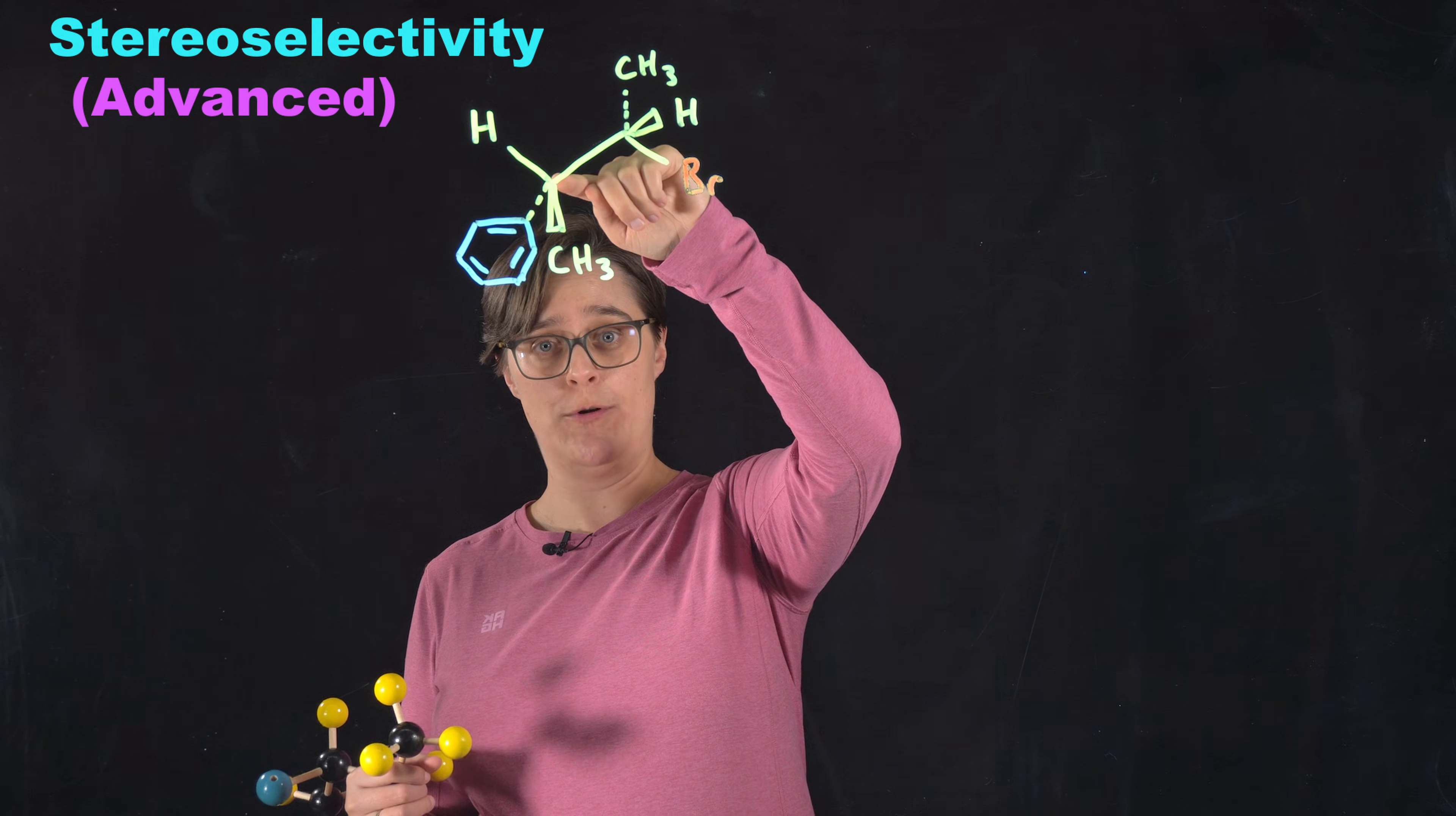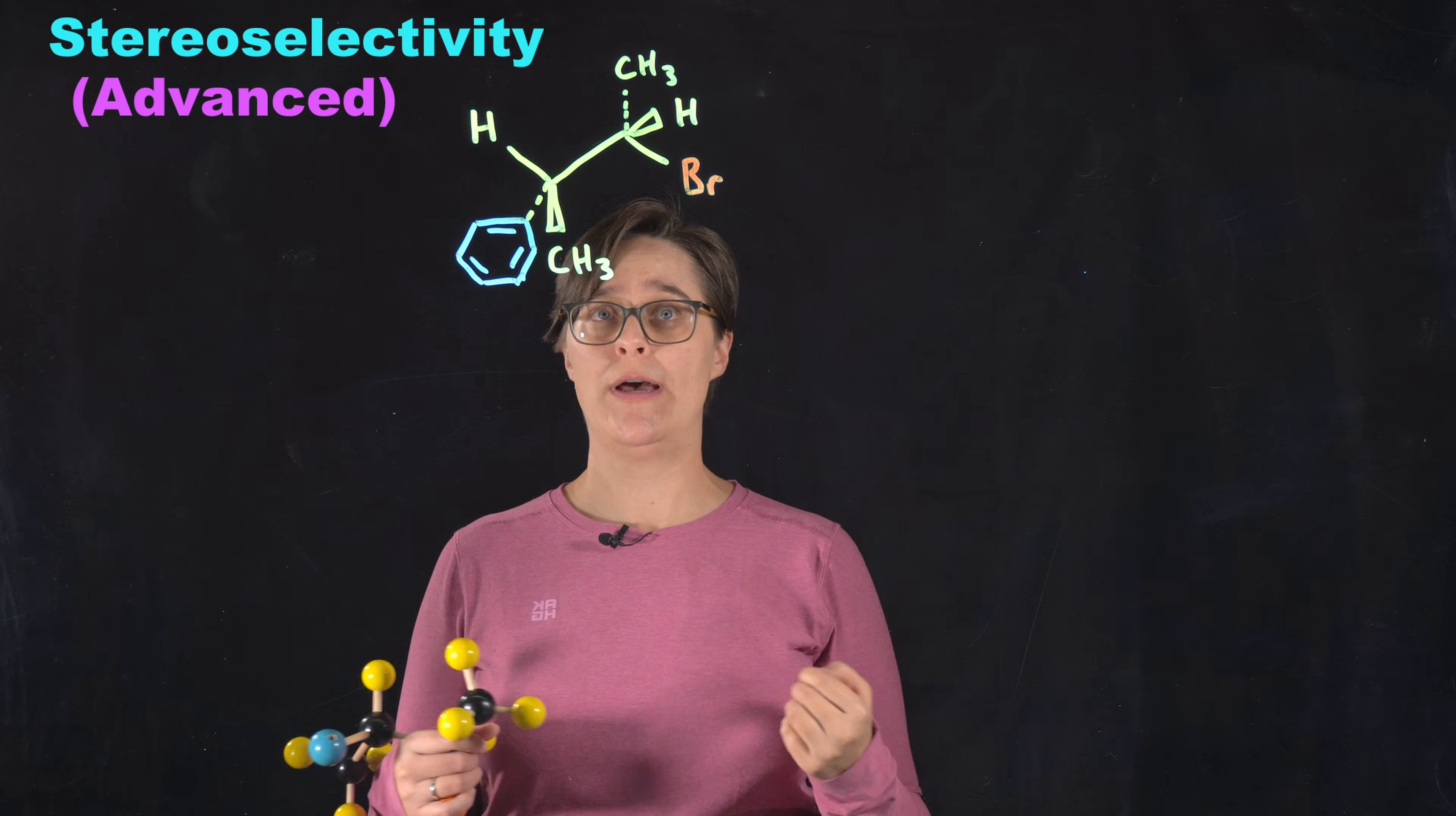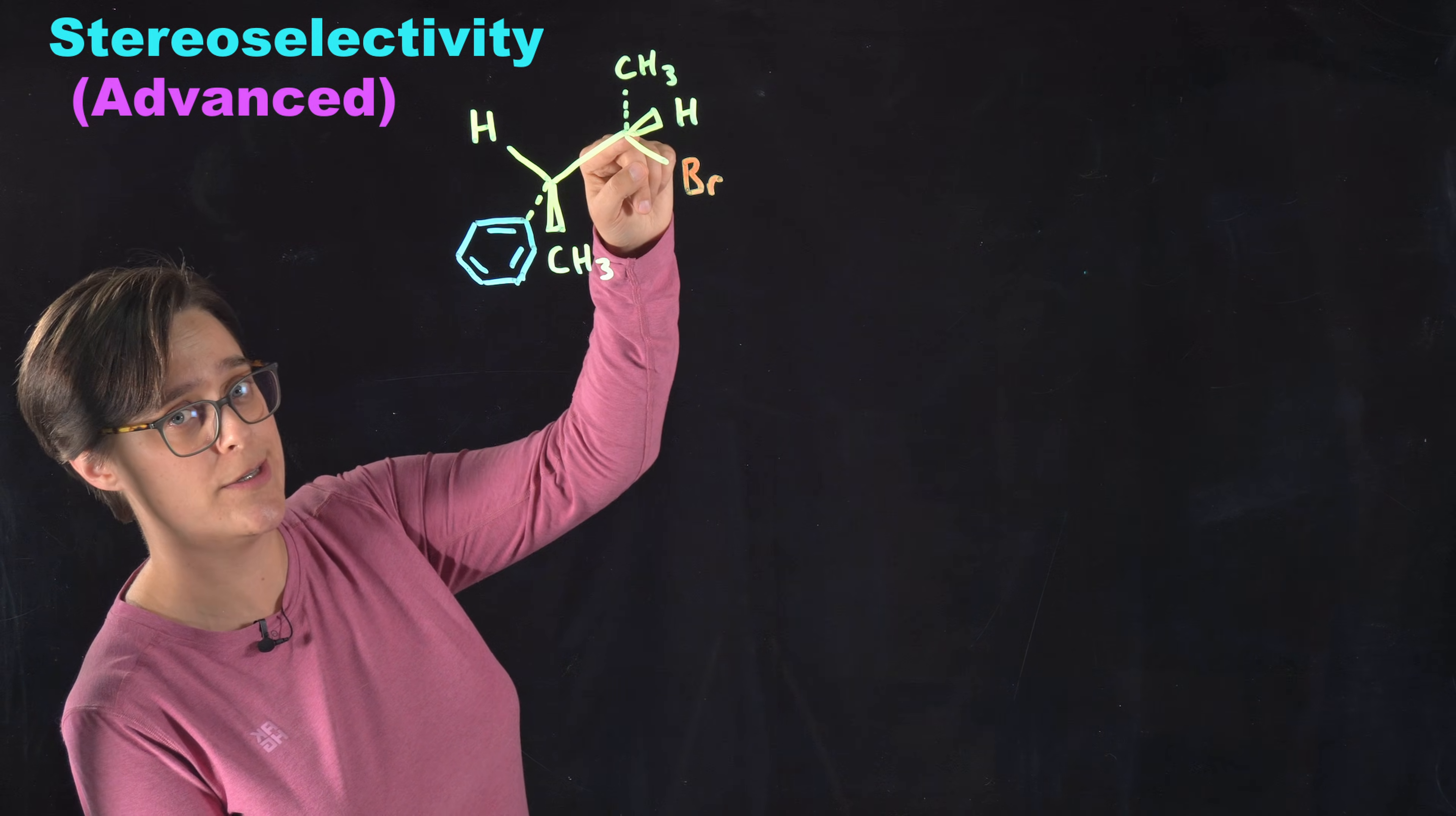So this bromine and this hydrogen need to be in the anti-conformation. So I'm going to draw a Newman projection. Get out your molecular model kit if that's going to help. But I am going to draw a Newman projection looking down this bond with this carbon in the front, this carbon in the back.